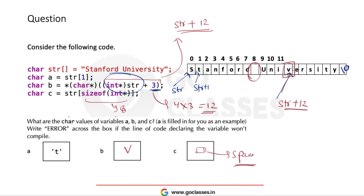If instead of directly dereferencing you do plus one before dereferencing — since it is again a char pointer — it will skip just one byte. So if the result was at 'v', doing plus one gives 'e' as the answer. The type of the pointer at the time of arithmetic determines how many bytes are skipped — char pointer skips one byte, int pointer skips four bytes.